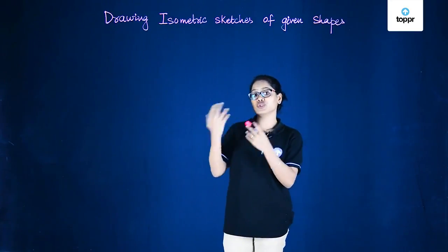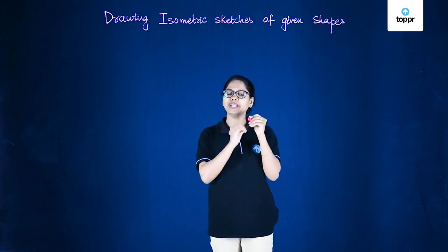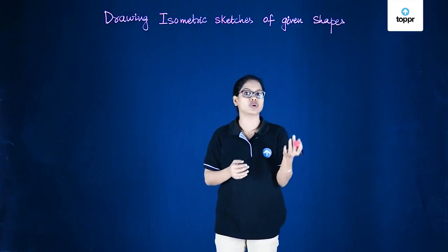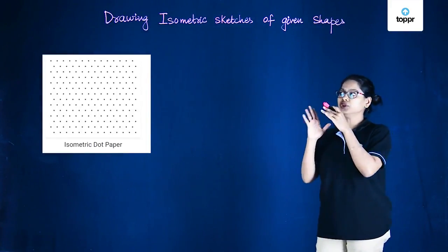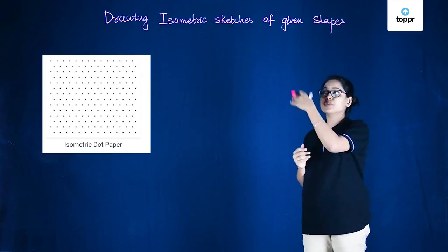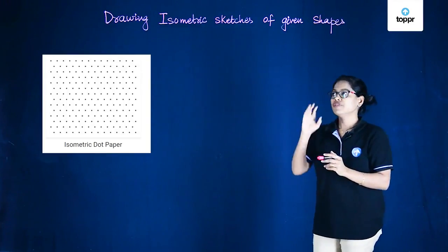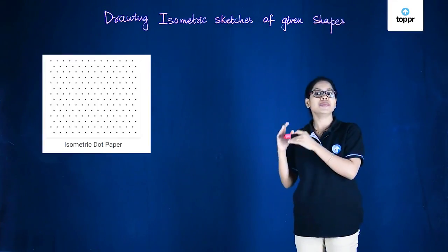For this we are using an isometric paper which is a special kind of paper made up of little equilateral triangles consisting of small dots. So here is an isometric paper that we'll be using to draw an isometric sketch. And the main feature of the isometric sketch is that it keeps the original measurements intact.